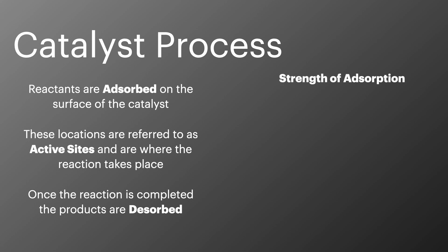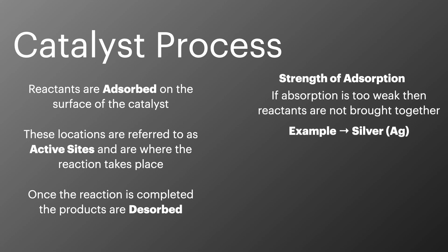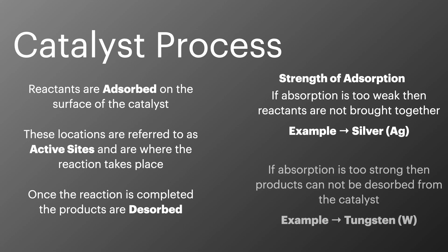The strength of adsorption is critical to the successful working of a catalyst. If the adsorption is too weak then it will fail to bring enough of the reactants together. Silver is a common example of a transition metal which often has a weak absorption. If the adsorption is too strong then the catalyst will not be able to release the product once it has formed. An example of this is tungsten.